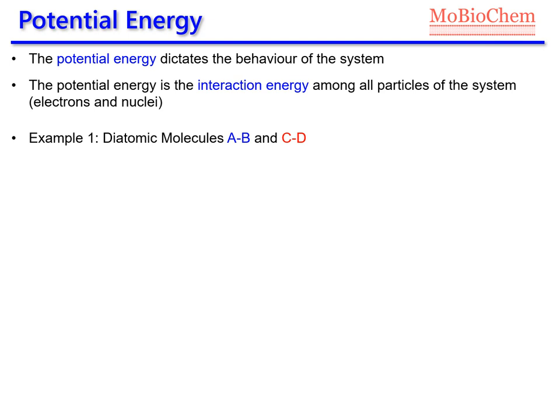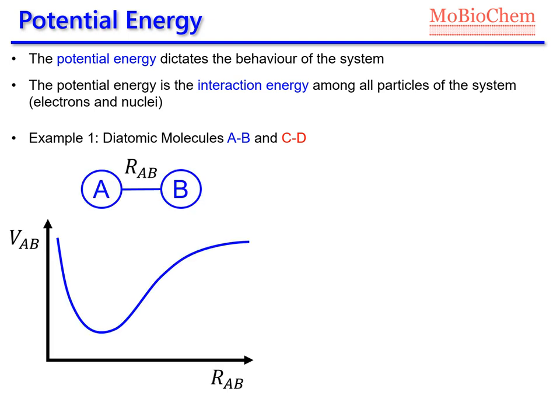It's very relevant to know the shape of the potential energy surface because it will dictate the behavior of the system. For example, let's say we have two diatomic molecules. The first molecule AB has a potential energy curve with a relatively small curvature. If we represent the vibration of the diatomic molecule as a particle running in this potential energy surface, we will have this kind of vibration. Since the curvature of our potential energy is not high, the vibration is relatively slow.